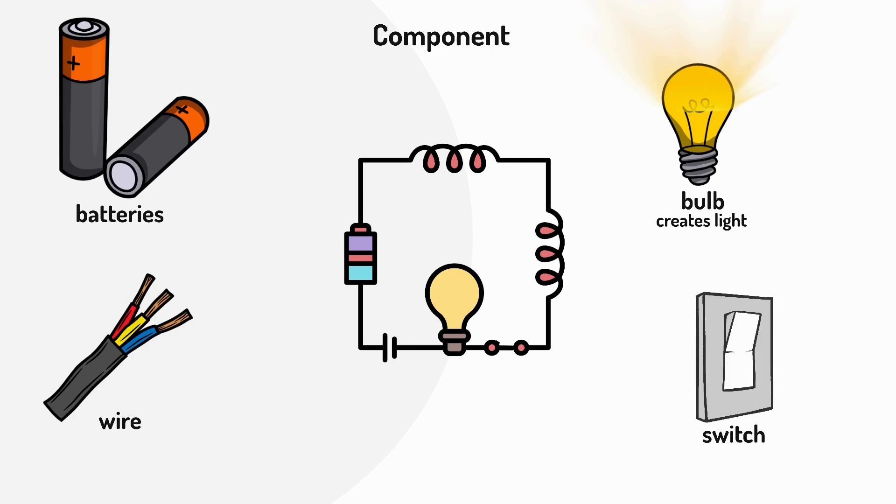A bulb creates light when electricity flows through a tiny wire inside it called a filament. The filament gets so hot it glows brightly and that's how we get light.